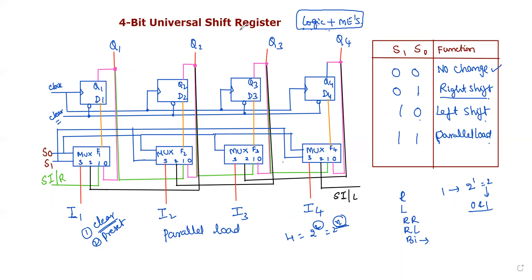If we store binary data, we need 4 bits of data, so we need 4 flip-flops. Each flip-flop stores only a single bit at a time. So for 4 bits, we connect 4 flip-flops with a clear input. The clear input and preset input are always connected through NOT gates, so we supply the signal through NOT gates. Using NOT gates reduces the cost of the flip-flops.